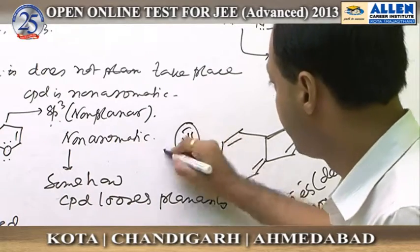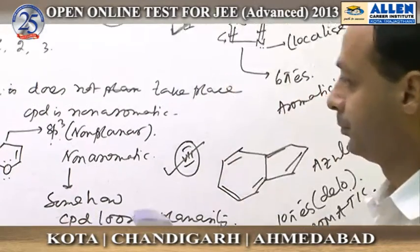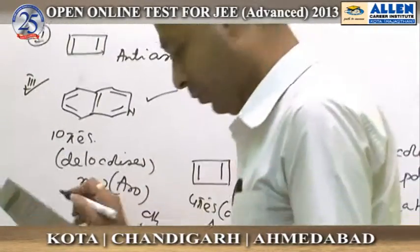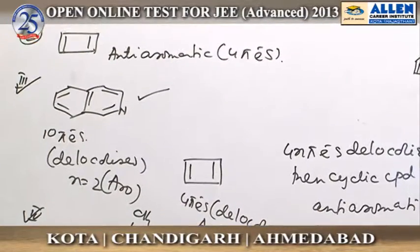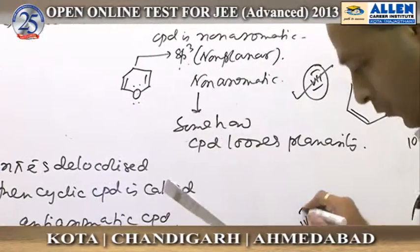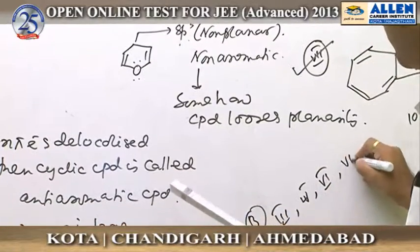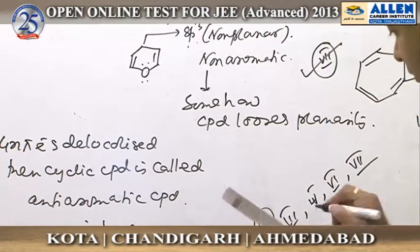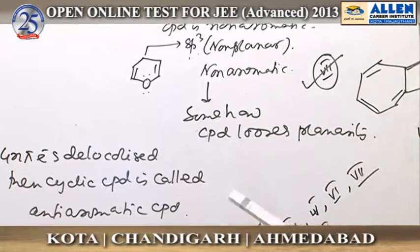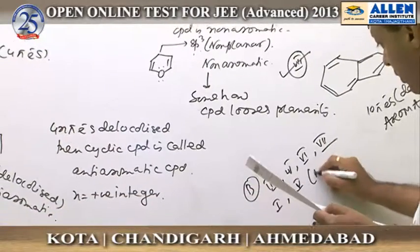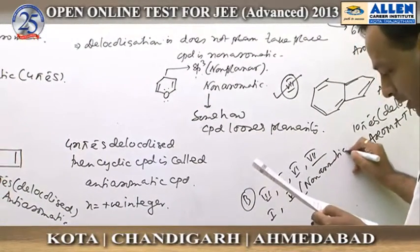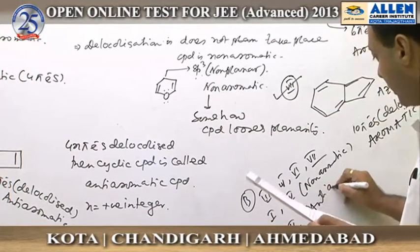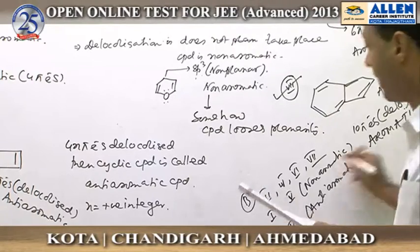So the total aromatic compounds are numbers three, four, six, and seven — option B is correct. Compounds one and five are non-aromatic, and compound two is anti-aromatic. Therefore, the answer is option B.